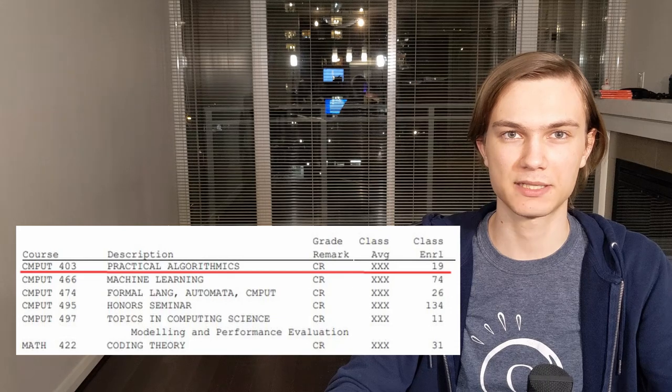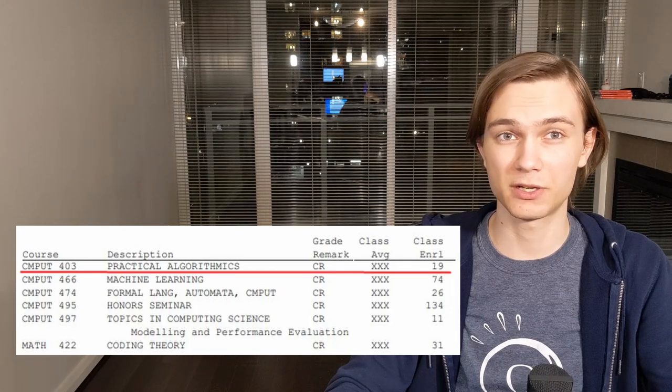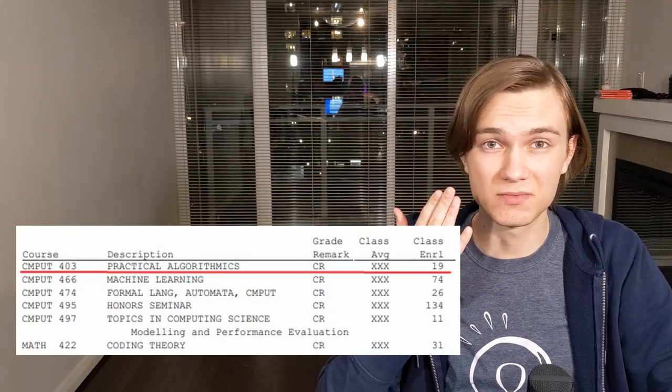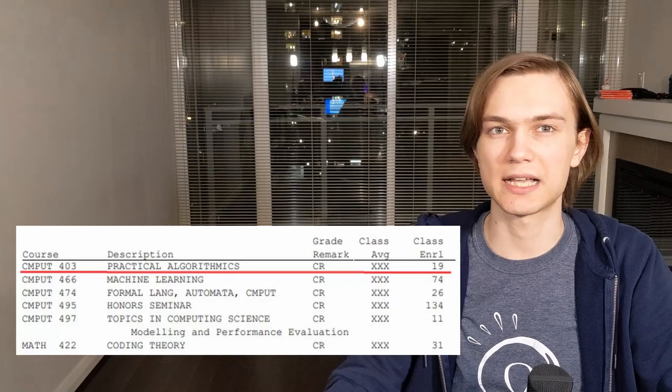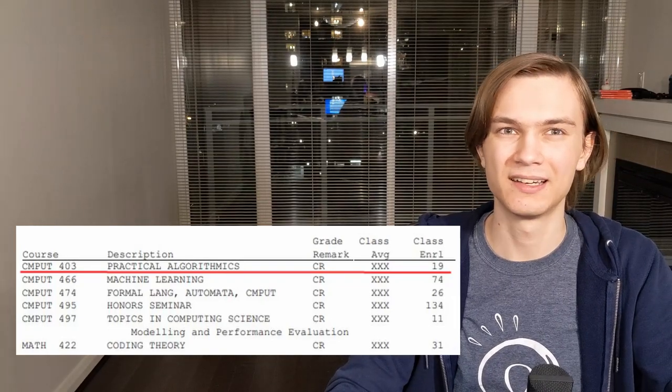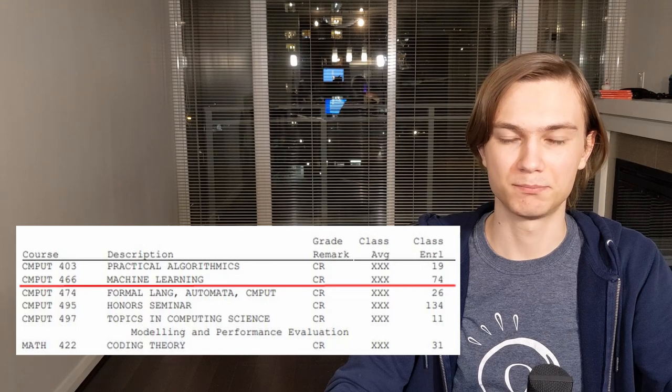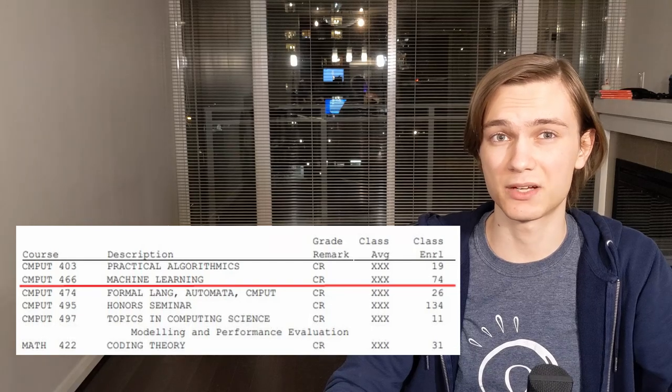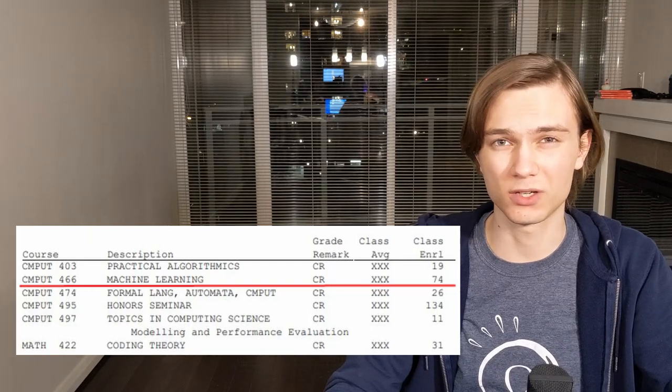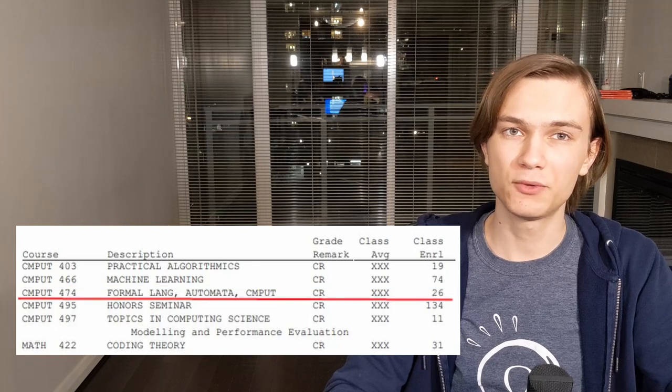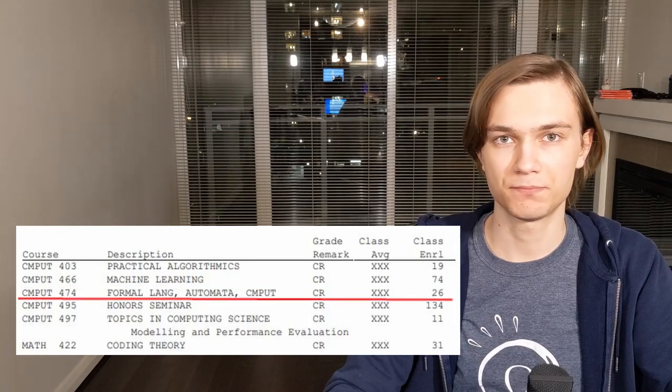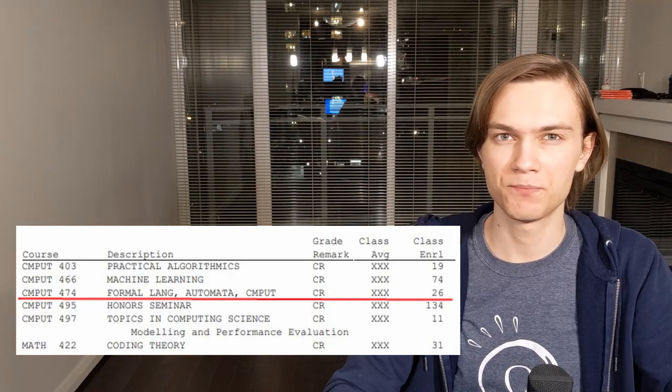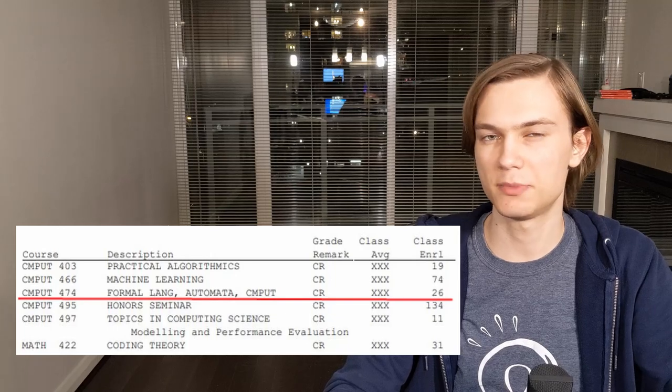CMPUT 403, Practical Algorithmics. This is a class used as practice for programming contest attendees. Holy crap was I out of my depth here. I did contests, but I was not good. Fun class and totally worth it in the end, but oh god. CMPUT 466, Machine Learning. I really don't care about it now. I only did this course because my uni is world renowned for it. So much work for this class though, god. CMPUT 474, Formal Languages, Automata, and the Theory of Computation. What a great course on theoretical CS and complexity theory. It's not too bad, but definitely deserves to be a 400 level course.